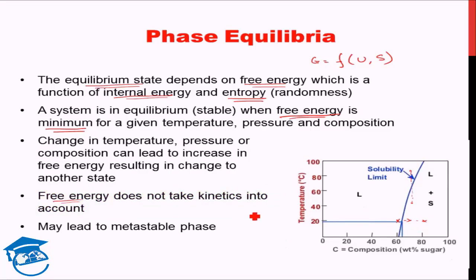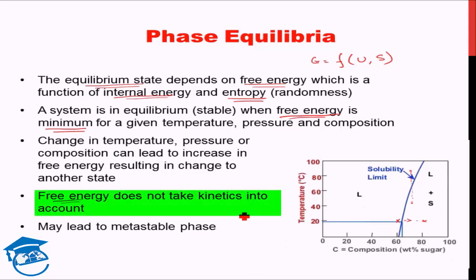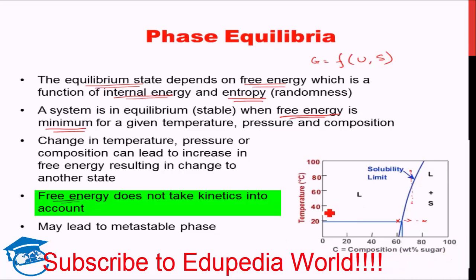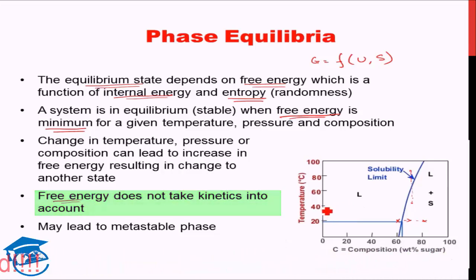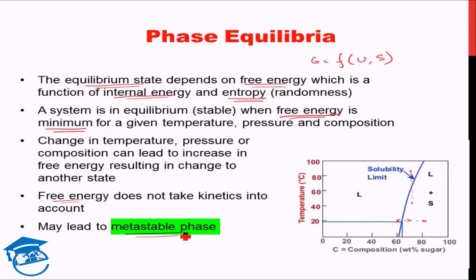We will see the concept of kinetics in a later chapter. For now, just know that kinetics is a concern but the phase diagram — which is the equilibrium state diagram — does not take kinetics into account. As a result of kinetics, if a transformation requires a lot of time but insufficient time is available, we can end up with what is known as a metastable phase. The metastable phase is not the most energetically favorable phase, but due to kinetic constraints it acts like a stable phase because we are not able to attain the most stable phase.